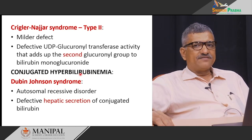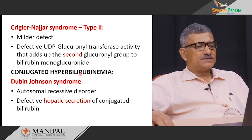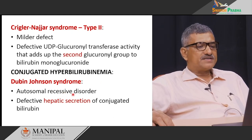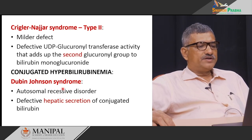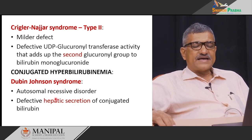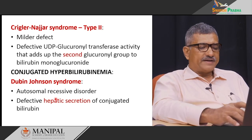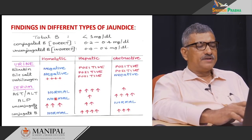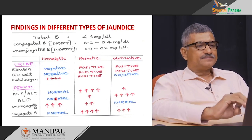Dubin-Johnson syndrome is an autosomal recessive disorder classified under conjugated hyperbilirubinemia. It is characterized by defective hepatic secretion of conjugated bilirubin into the intestine.